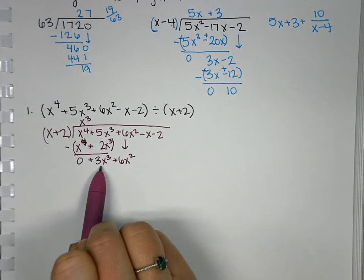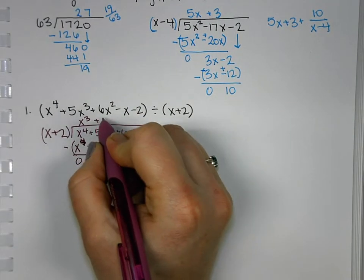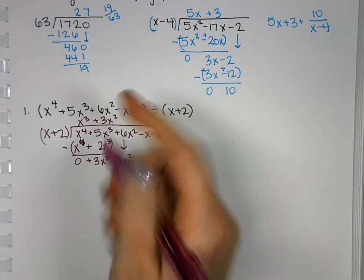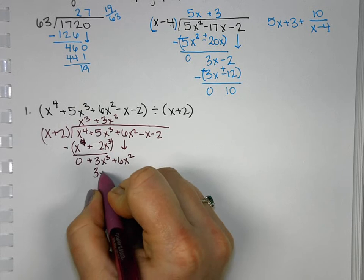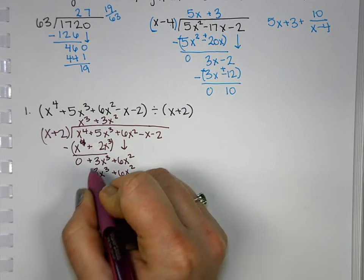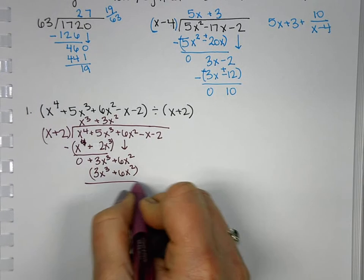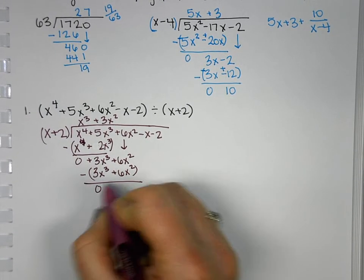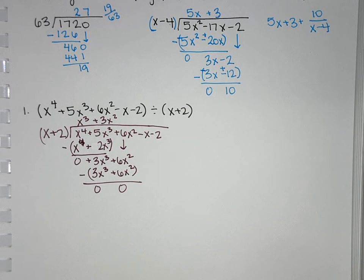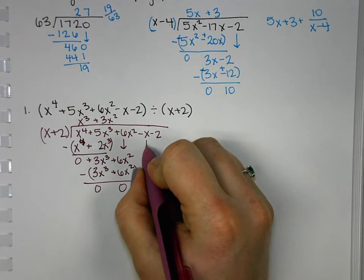x times what gives us 3x to the 3rd? 3x squared. So then we'll multiply and subtract. And what happens here is everything cancels out.